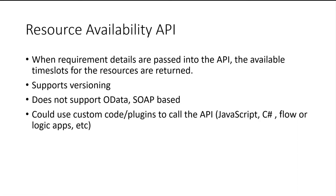This API also supports versioning, so you can roll back and forth between different versions to use different parameters. Because of the way the API signature is — where we pass an entity construct to the API input — OData calls are not yet supported. We are still relying on the SOAP endpoint for making calls. This is a known issue raised with the platform team, and there is something on the roadmap, but at this point we still need to use a SOAP-based API call. It doesn't support OData endpoints, meaning you can't call it directly through the web API endpoints.